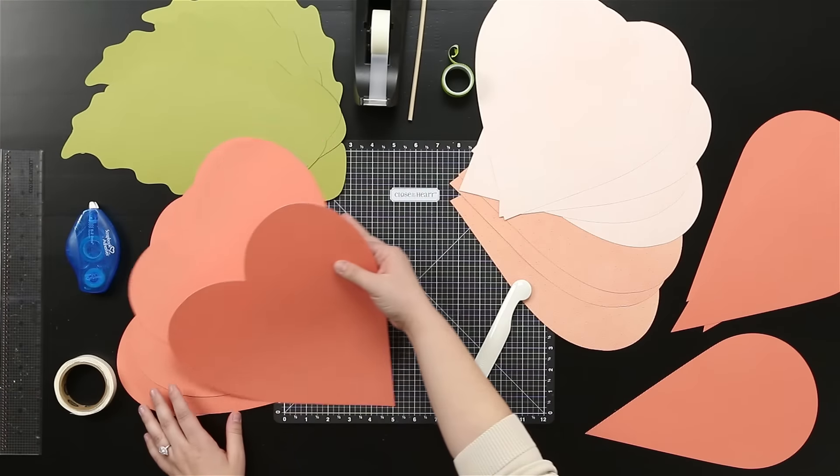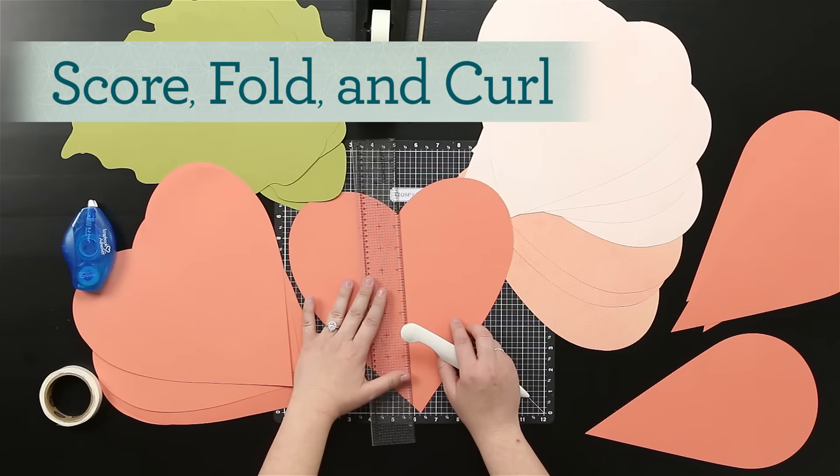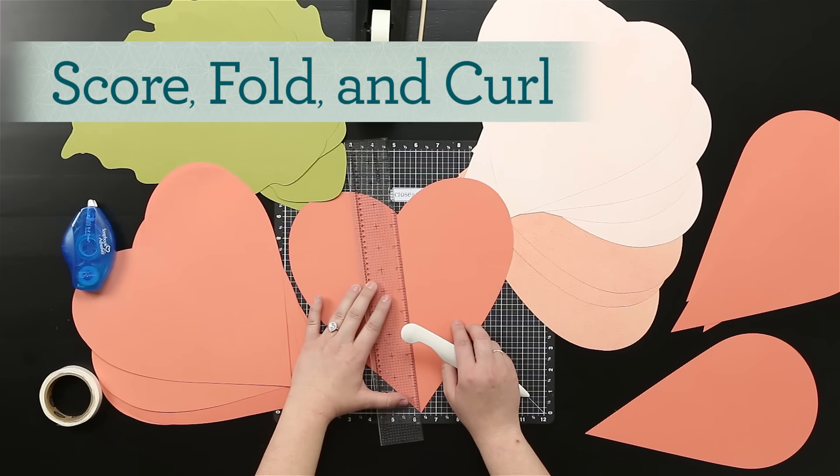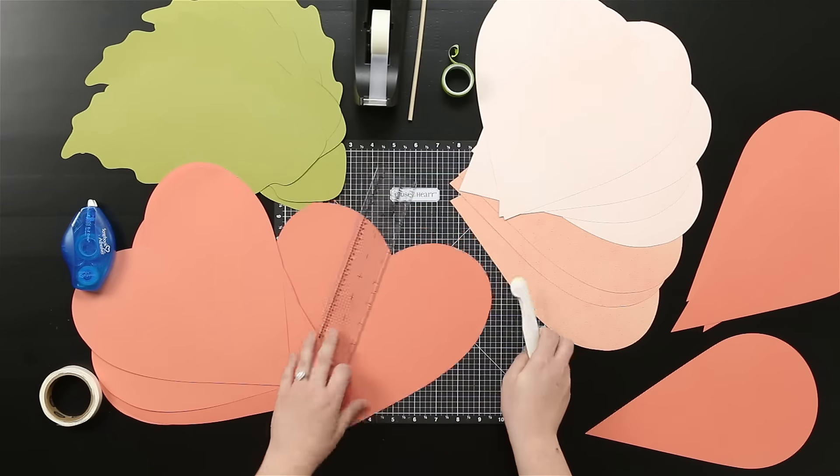Let's take our first Cricut Cut Heart and I'm going to measure right down the center here. I've got my ruler and using a bone folder I'm going to score right down the center. So simple.